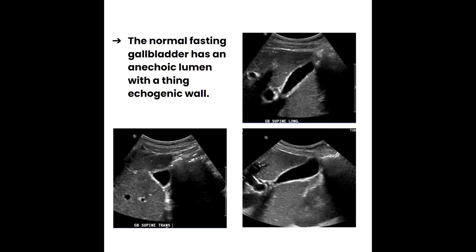Section 4.9, normal ultrasound appearance of the biliary tree. In a fasting or NPO patient, the normal gallbladder appears anechoic with a thin echogenic wall. Here we have the gallbladder — nice and anechoic, no sludge, no stones — surrounded by a very thin echogenic wall. Notice how the fundus hangs just outside the inferior margin of the liver, with the body and then the neck more superior, near the portal vein.